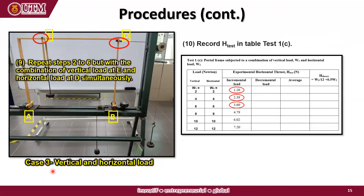For Case 3, the portal frame is subjected to a combination of vertical and horizontal loads. Repeat steps 2 to 6, but apply the vertical and horizontal loads at E and D simultaneously. Record the balancing load or horizontal thrust in Table 1C, then calculate the average and theoretical value of the horizontal thrust.